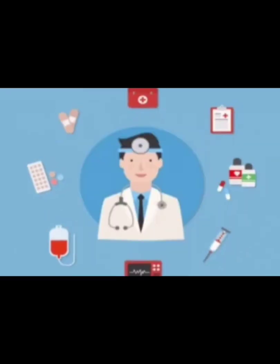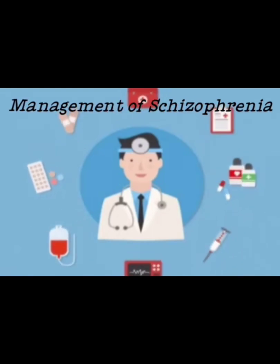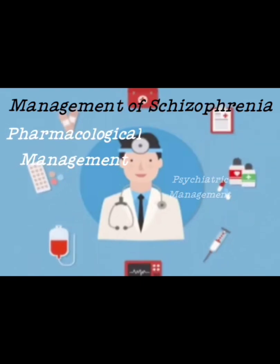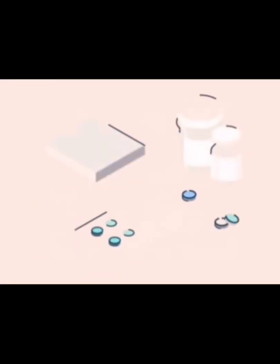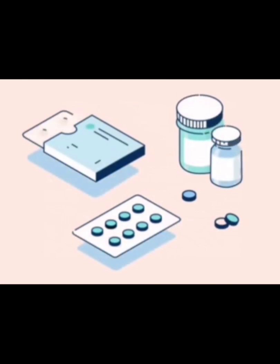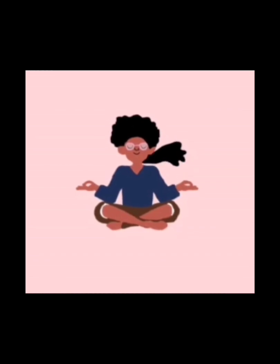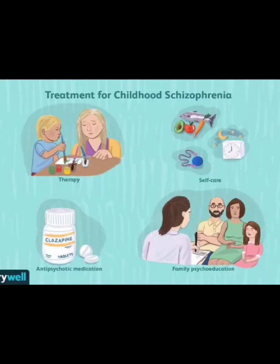For the management of schizophrenia, there is pharmacological management, psychiatric management, and family work management. In pharmacological management, the psychiatric doctor will advise the patient to take anti-psychotic medications. Other forms of management include self-help groups, problem-solving groups, rehabilitative groups, and proper education for the family in managing these kinds of patients.